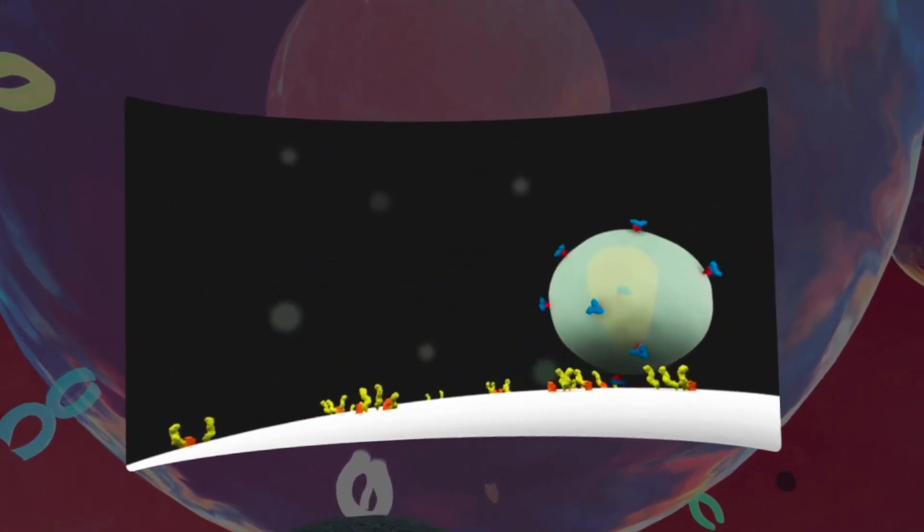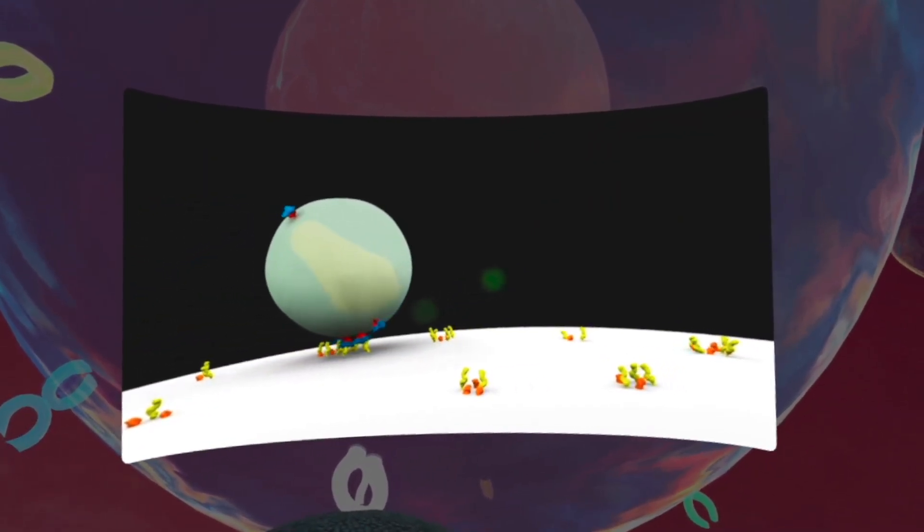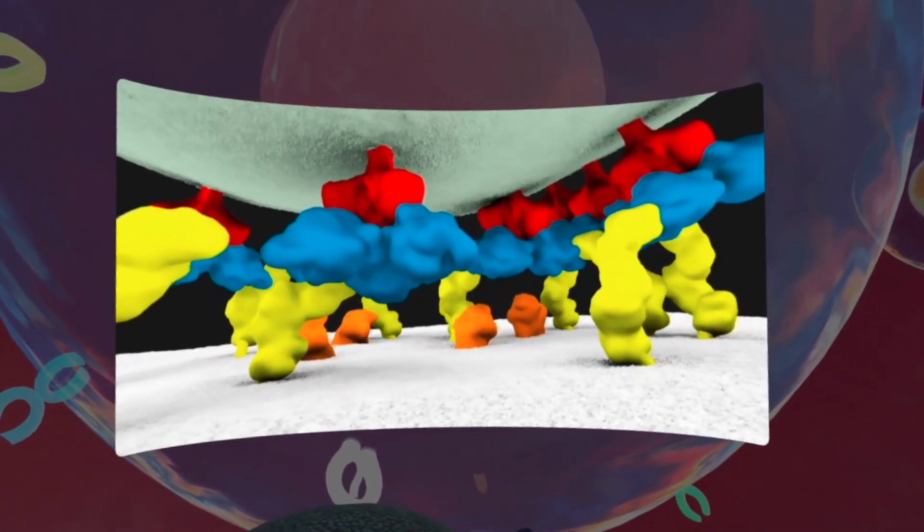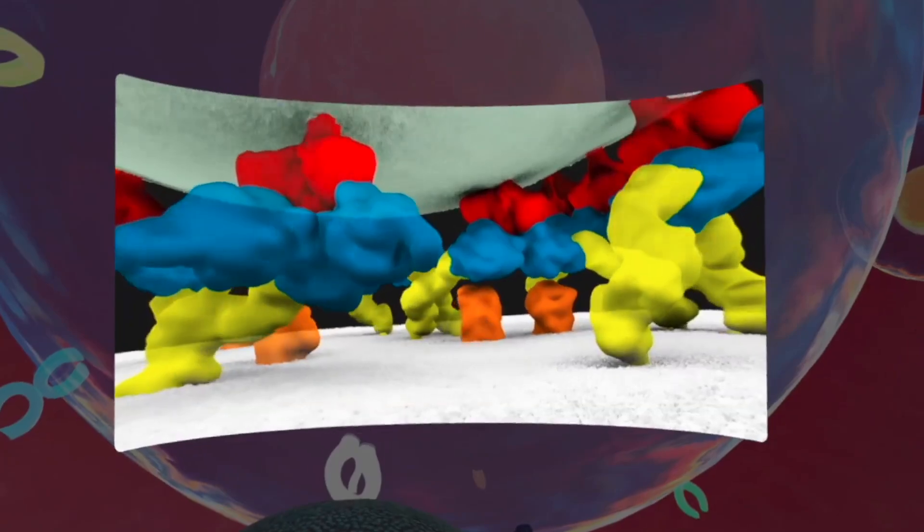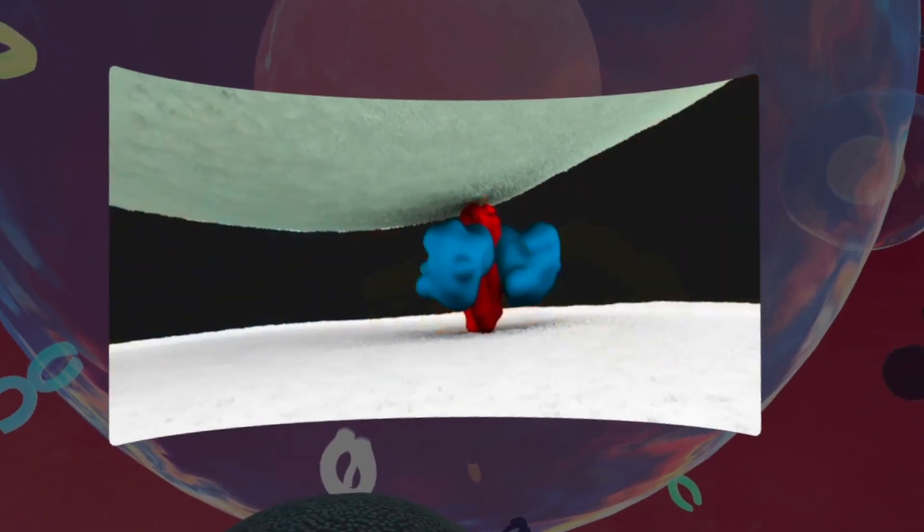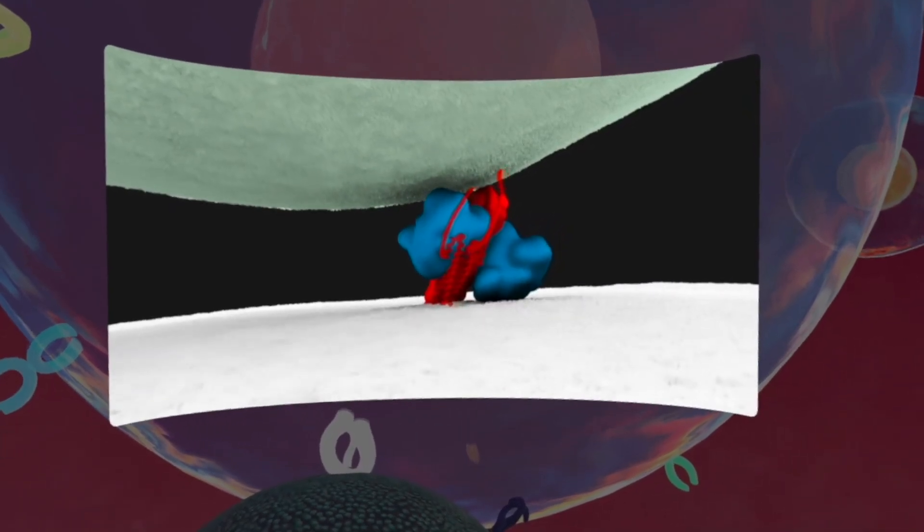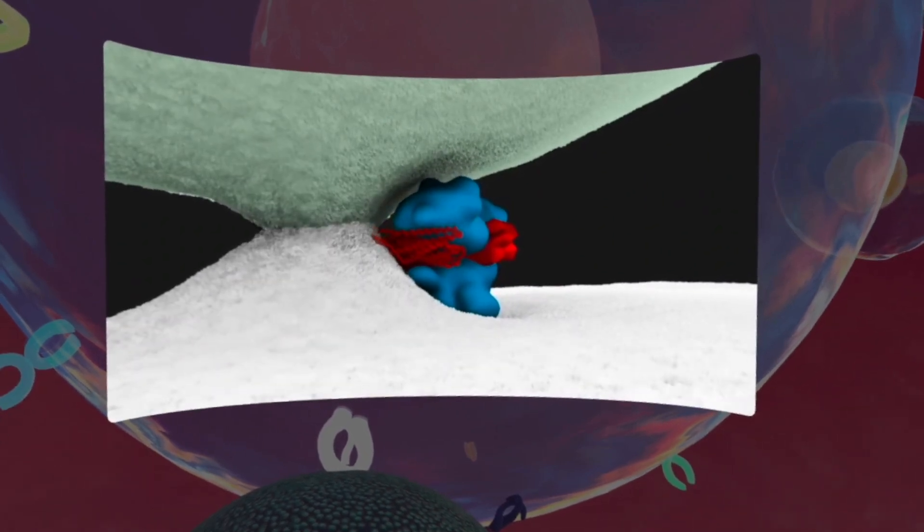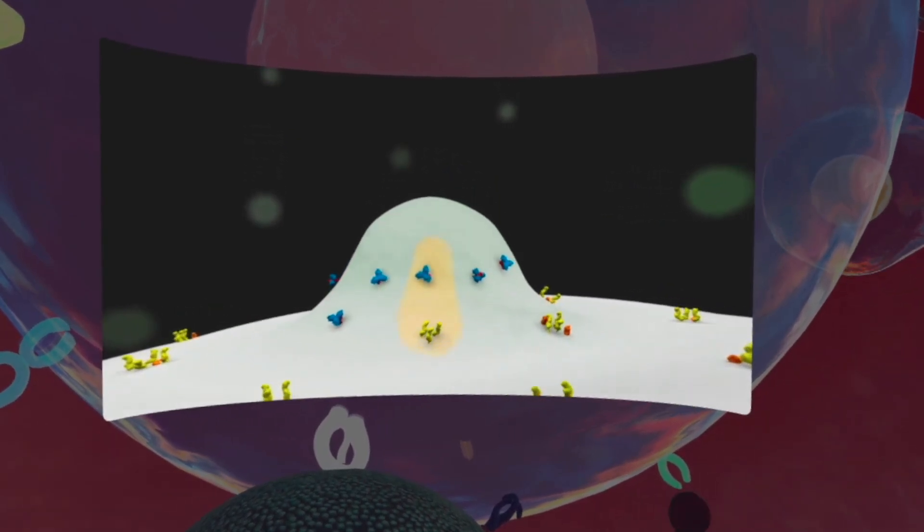The virus recognizes T cells, a type of blood cell, through the interaction between the viral envelope proteins and membrane proteins on their surface. The fusion of the two membranes allows the viral capsid to enter the cell.